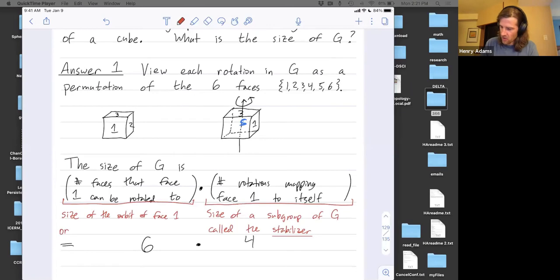Another name for this is the number of cosets of this subgroup. So another way to think about this is using cosets, the number of cosets of the subgroup fixing face 1. So I'm introducing language that's a little bit advanced, but we'll learn about it more either later today or on Wednesday.